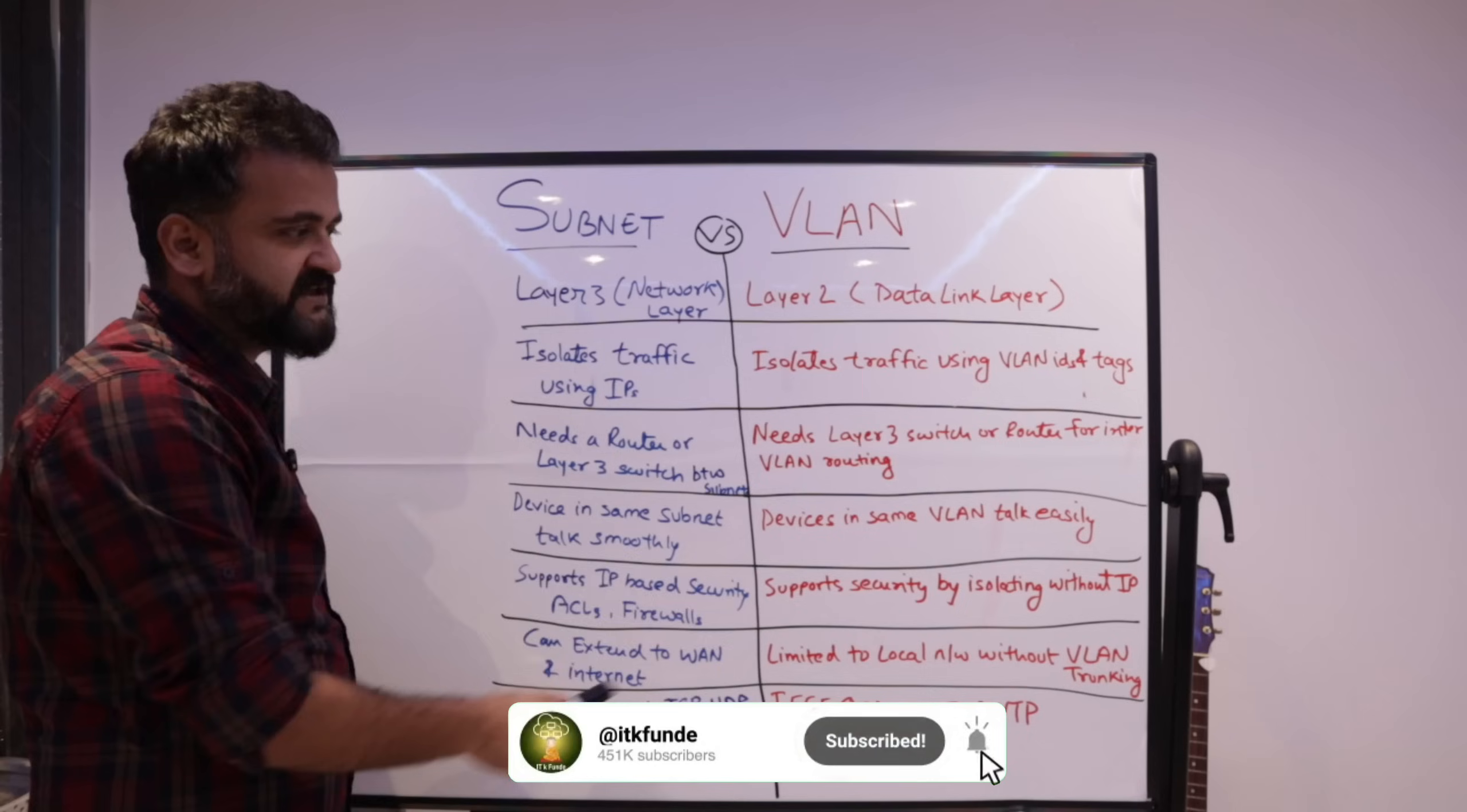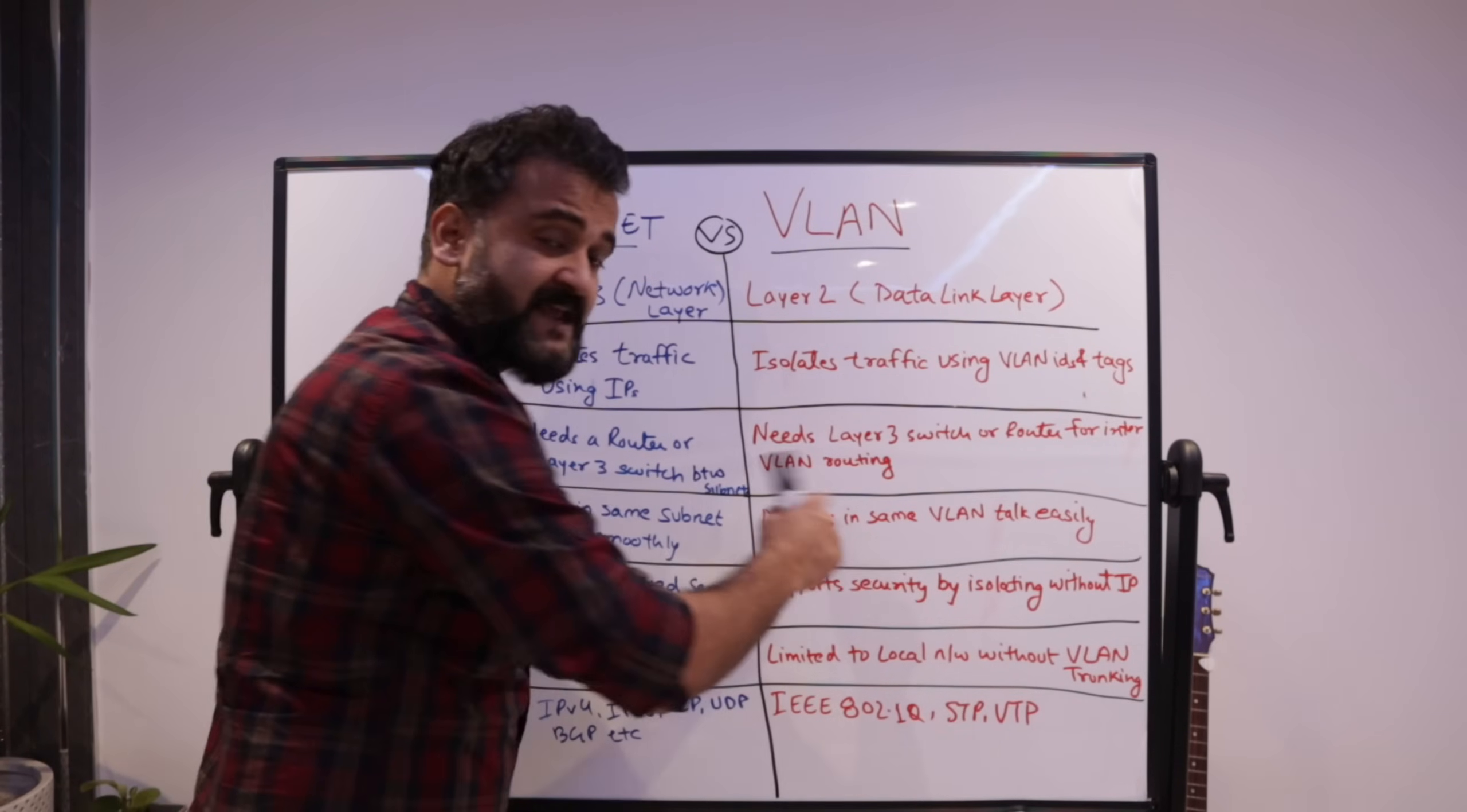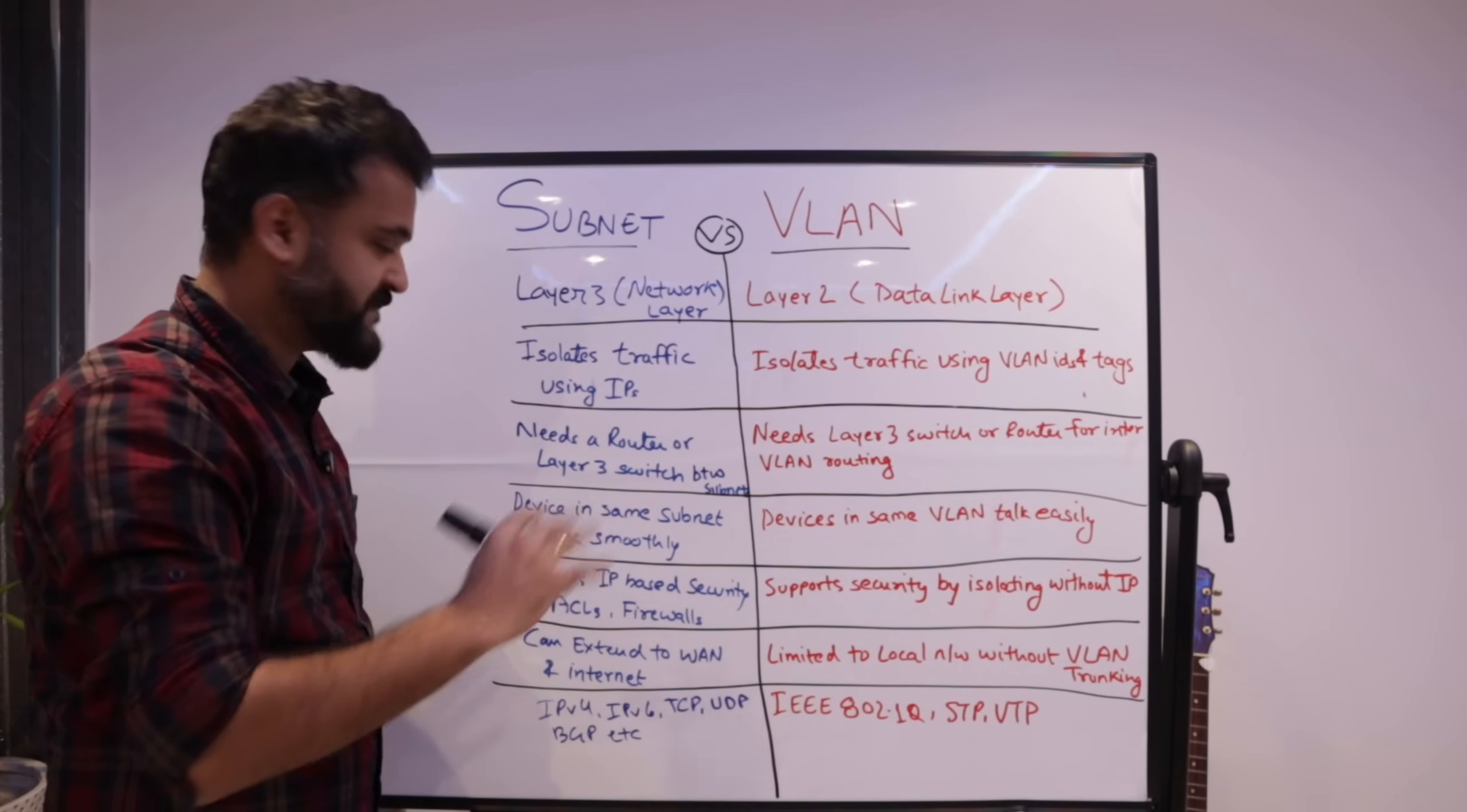It's always smooth when the devices are in the same subnet. So they can talk easily, talk smoothly. Similarly, if the devices are in the same VLAN, in the same domain, it will talk very seamlessly.